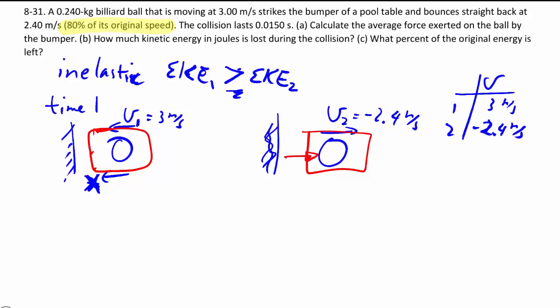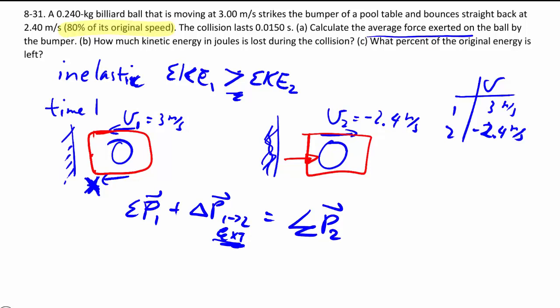So whatever force the bumper pushes onto the ball, that's considered an external force. When we write our sum of P1 plus delta P1 to 2 external equals the sum of momentum at time 2, this is no longer 0 because we actually have an external force. That's what they're asking us for here. So we can expand this out: mv1 plus force times delta T equals mv2.